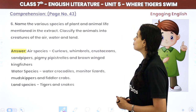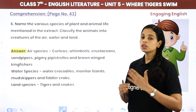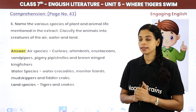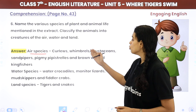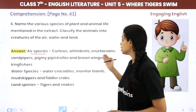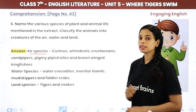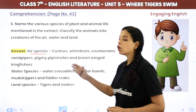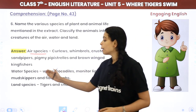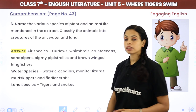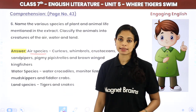Name the various species of plant and animal life mentioned in the extract, and segregate them by air, water, or land. Air species: curlews, whimbrels, crustaceans, sandpipers, pygmy pipistrelles, and brown-winged kingfishers. Water species: water crocodiles, monitor lizards, mud skippers, and fiddler crabs. Land species: tigers and snakes.